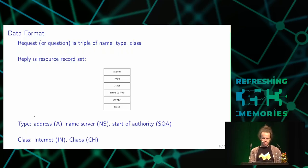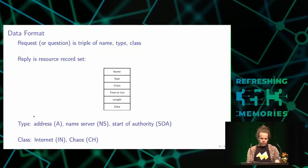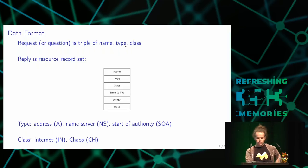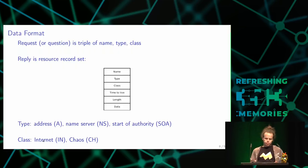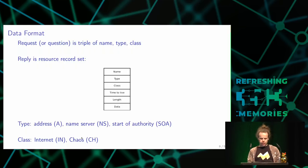Resource record types include the address record, also called the A record. There are other types like the name server record (NS) and start-of-authority (SOA). The class field is usually set to Internet, which is basically the only one used in today's networks, though others exist from when DNS was originally developed, such as chaos net, which is not really used these days.